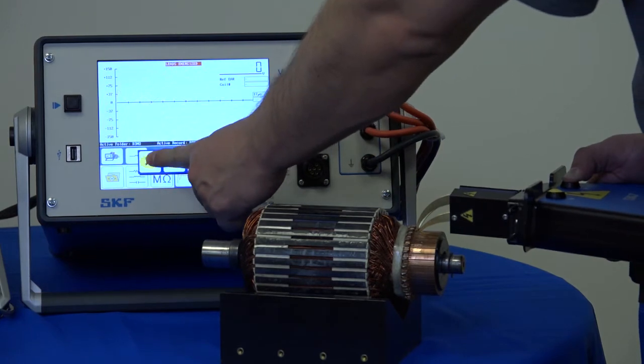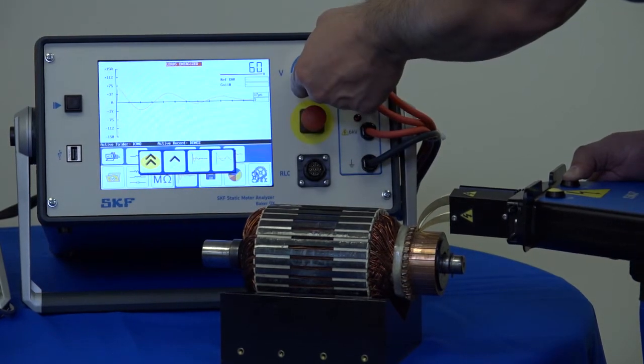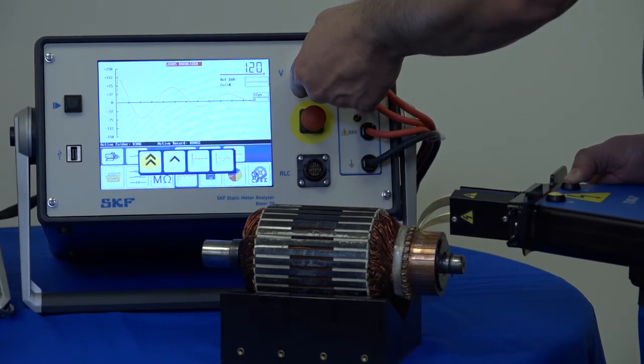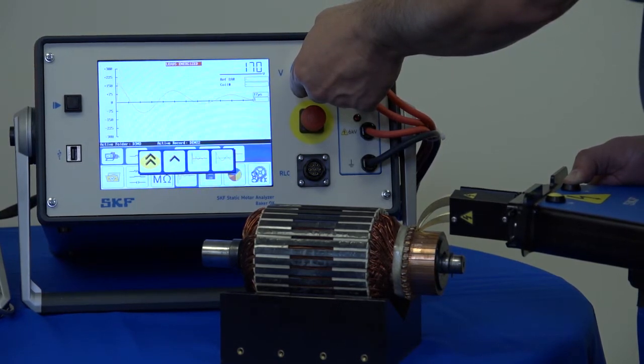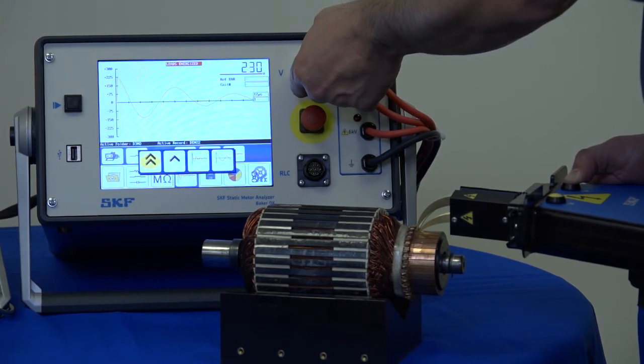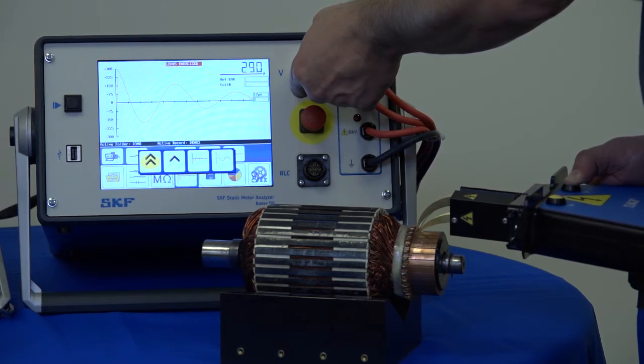I'm going to change it to the fast ramp rate and increase to my test voltage. So for this armature, we're testing it today at 400 volts. So I'll ramp it until I see 400 volts.